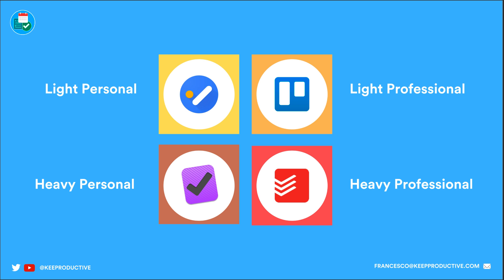Let's apply the quadrant to a to-do list example. In the top left we have Light Personal - very casual use like shopping lists, tracking birthday presents, simple personal tasks that don't require projects or much detail. Apps that match this criteria include Google Tasks, iOS Reminders, and Microsoft To Do - very simplistic applications suited to someone who doesn't need an advanced task manager, perhaps someone retired who's planning trips and going on walks.